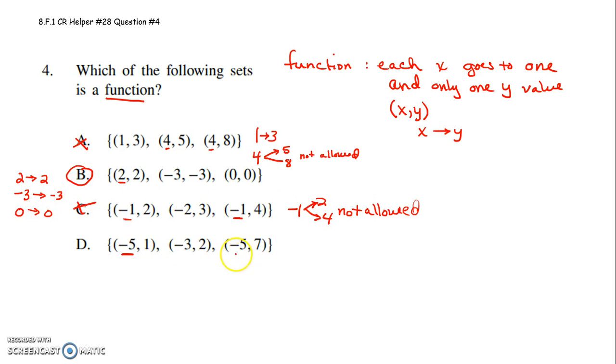This one? See how you have negative 5 here? You have negative 5 repeating. It's trying to map to both 1 and to 7. That's not allowed. So it's not a function.